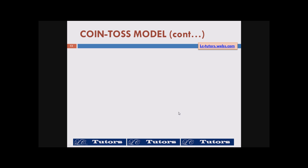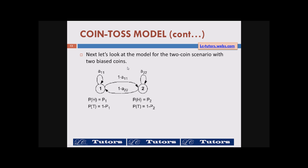Let's proceed further and look at the two coin model. That means behind the curtain there is a person tossing two coins. In this case we can assume that state one is coin one and state two is coin two. Therefore there are four unknowns: a11, a22, one minus a11, and one minus a22 — that is, the probability of tossing coin one and getting head, the probability of tossing coin one and getting tail, and similarly for coin two.